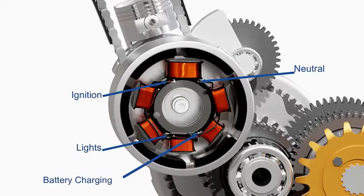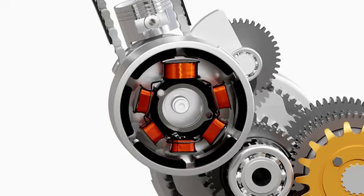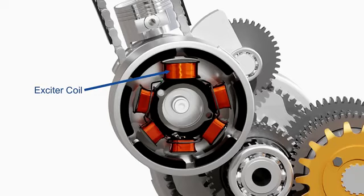Each output from the stator has different purposes, as shown here. The output for the ignition purpose is received from the exciter coil. This coil has a denser winding of thinner wire than the other coils to produce higher voltage for the ignition.